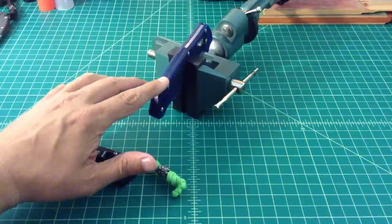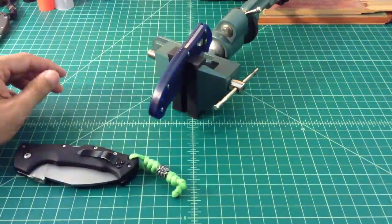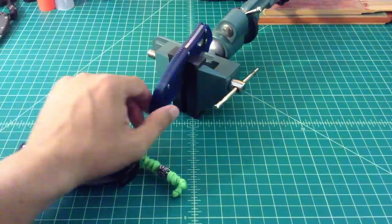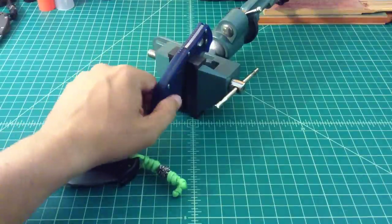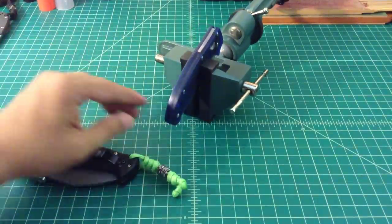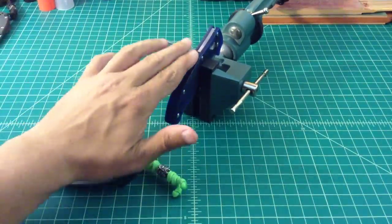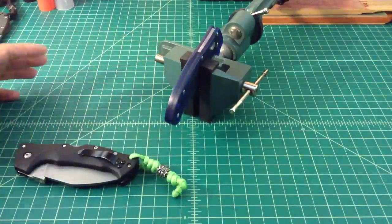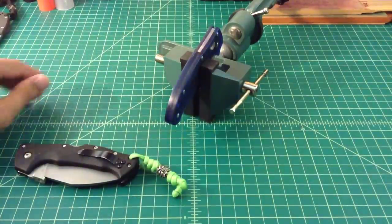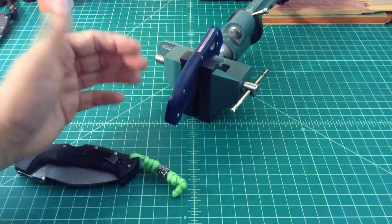Alright, so what I have here is a Spyderco Manix II lightweight. I actually have it clamped into a vise. You don't need to use a vise, but it makes it a lot easier if you have something holding the knife, or whatever it is you're going to tie a lanyard to.